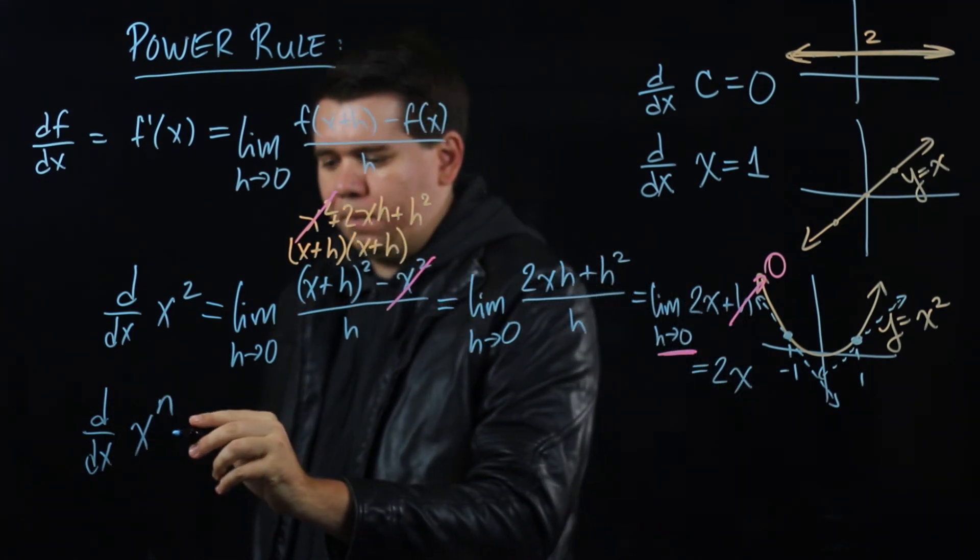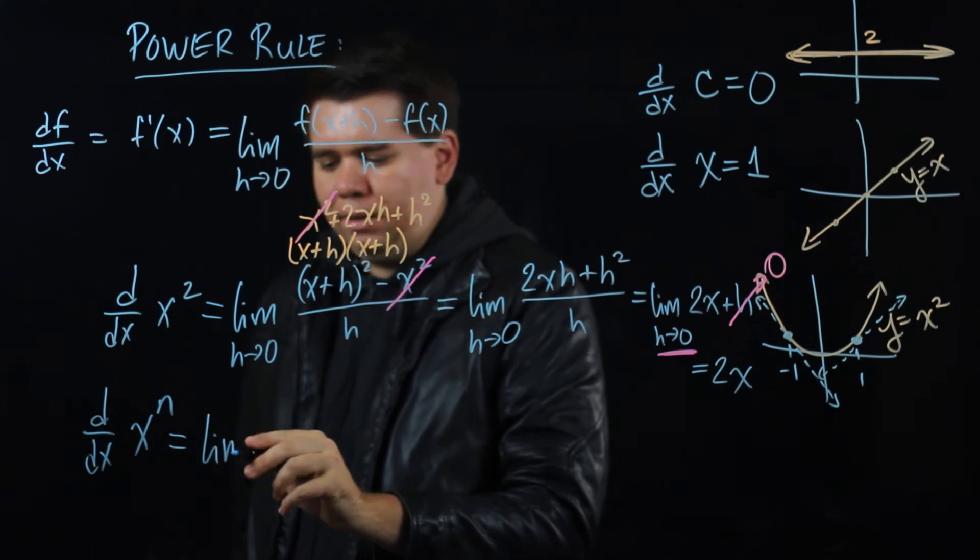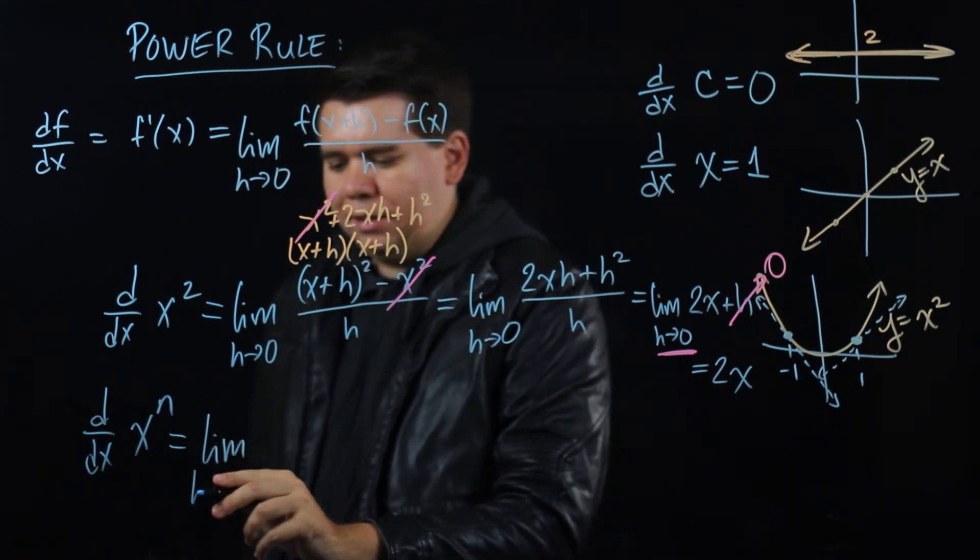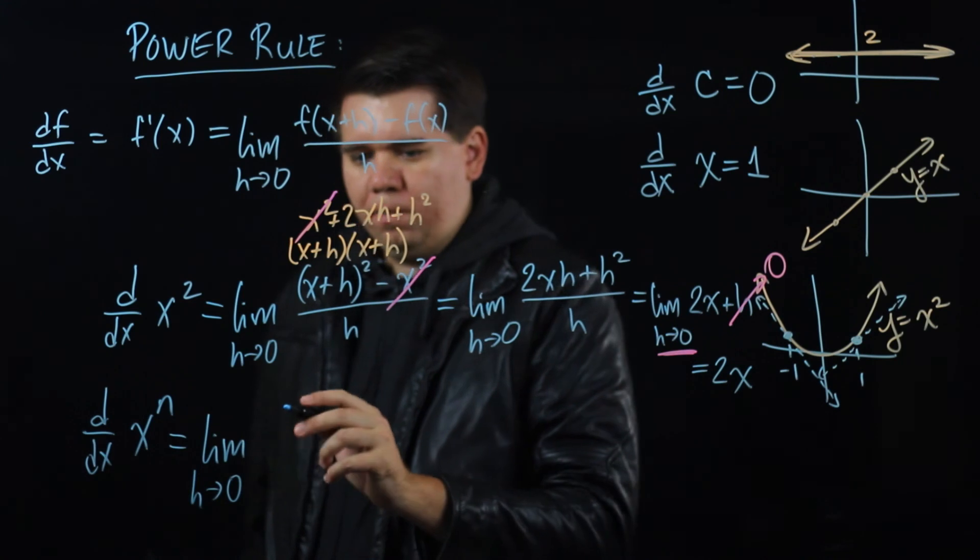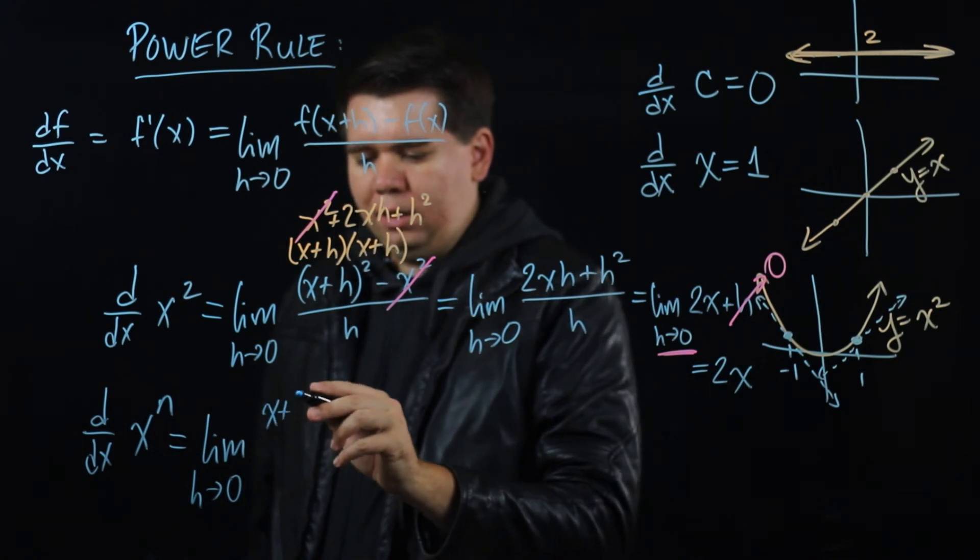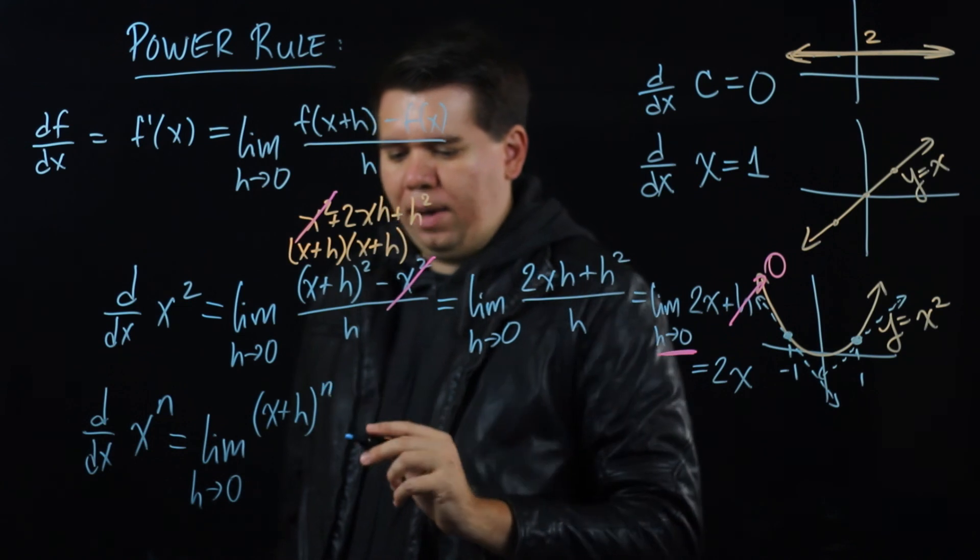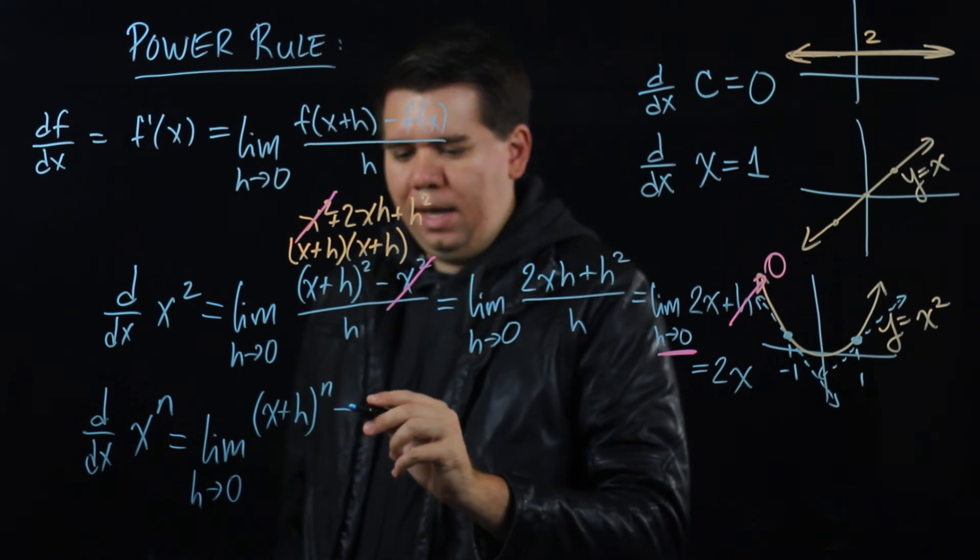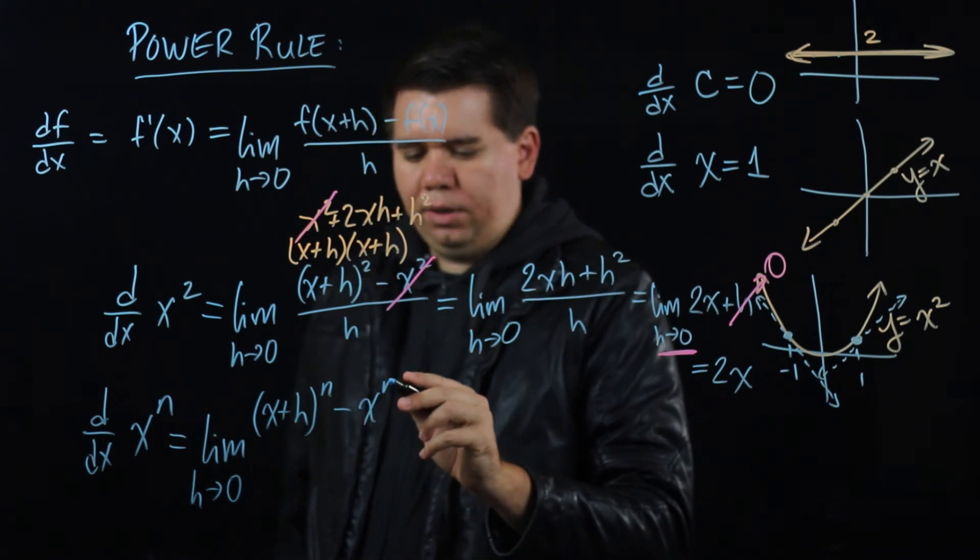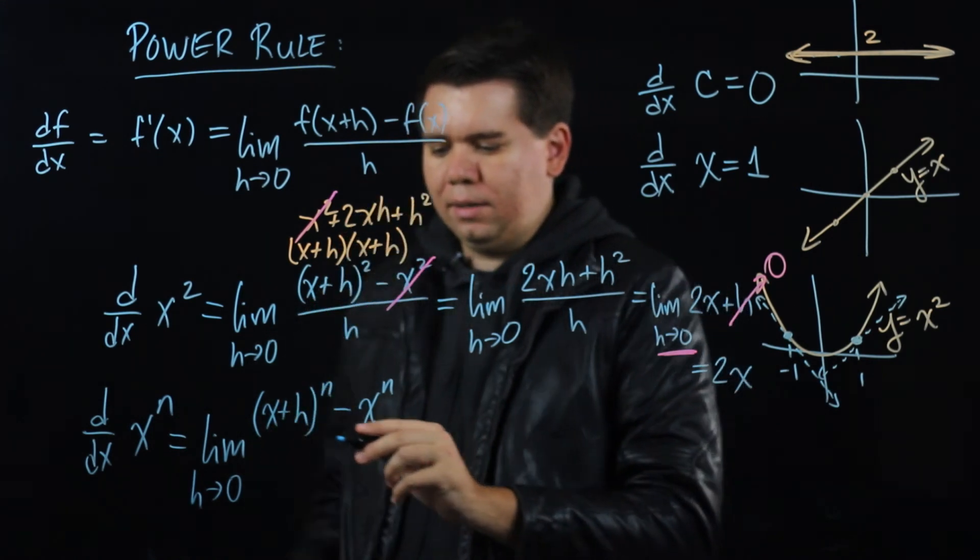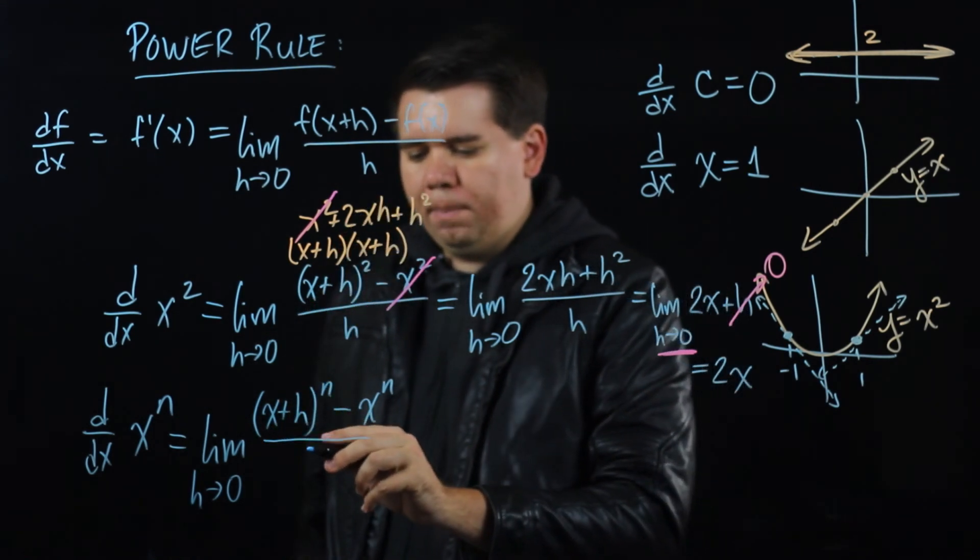What would be the derivative of x to the n? Well we can see the limit will be the limit as h goes to 0 of x plus h, you have to plug in x plus h, to the nth power minus x to the nth power, because you just plug in x the second time, divided by h.